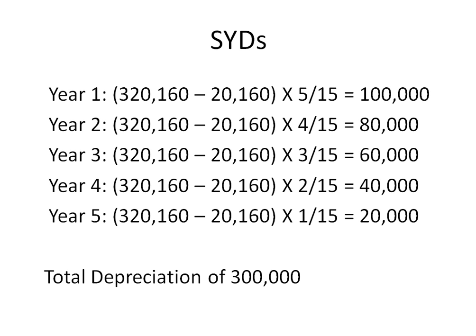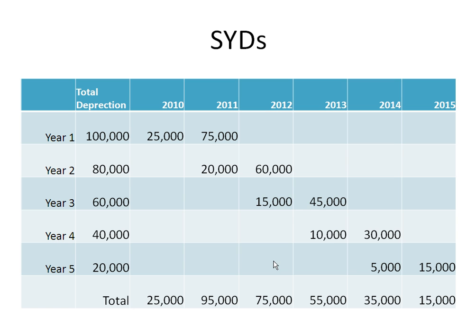The way I like to set up a table is shown on this next slide. For my first year, I know I'm going to have $100,000 of depreciation. However, three months of that is going to fall in 2010, and nine months of that is going to fall in 2011. So I take $100,000 times 3/12 to get $25,000, and then $100,000 times 9/12 gives me $75,000. So even though my first year is $100,000, three months of that is in 2010 and nine months is in 2011.